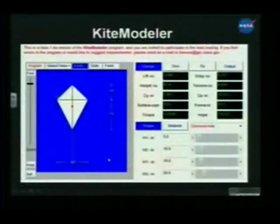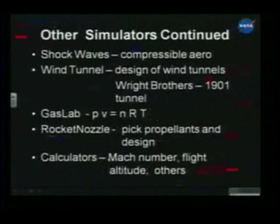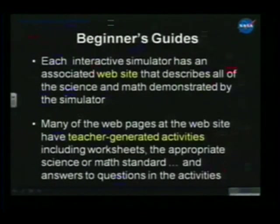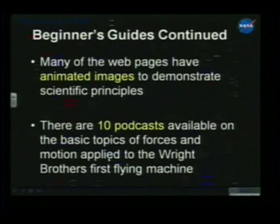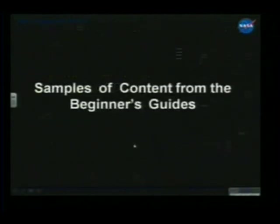Letting kids experience doing a prediction with a computer program — how a kite's going to work, how a model rocket's going to work, how a wing's going to work — and then actually building one and seeing how it doesn't agree with the computer programs, and then making an explanation of why it doesn't agree, leads to a little deeper understanding of science, math, and engineering. There are a bunch of other simulators; just remember every simulator has a website with all the science and math. Most web pages have teacher-generated activities.